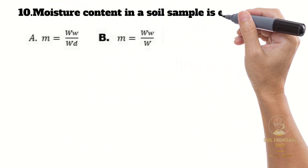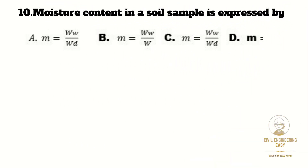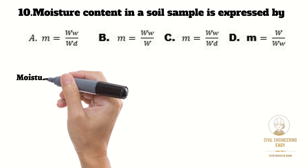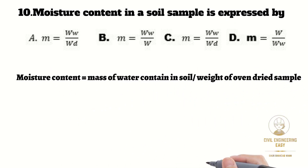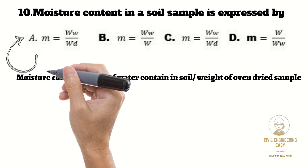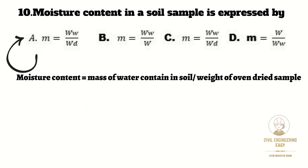In MCQ number ten, moisture content in a soil sample is expressed as mass of water contained in soil divided by the weight of the dried sample. The correct option is A.